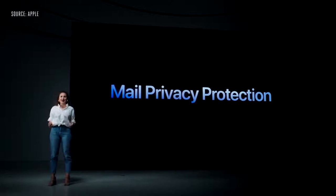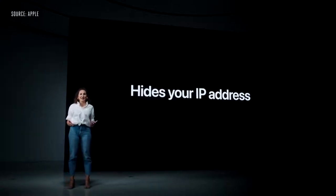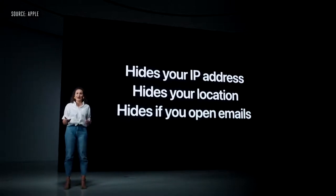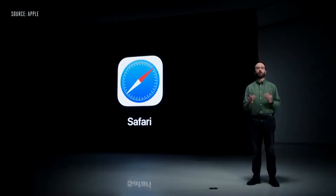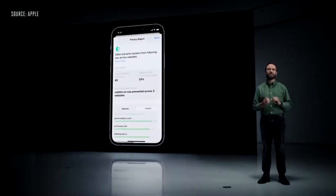Today, privacy is more important than ever. Now in the Mail app, we're introducing Mail Privacy Protection. It hides your IP address so senders can't link it to your other online activity or determine your location, and it prevents senders from seeing if and when you've opened their email. We're also making it even stronger by hiding your IP address from trackers so they can't use it to link your activity across different sites or learn your location. You can see which trackers are prevented from profiling you in the Safari Privacy Report.